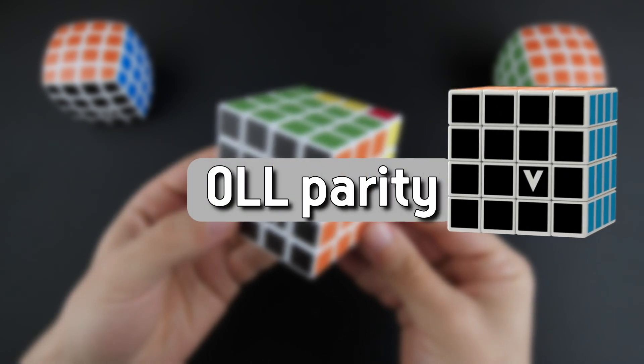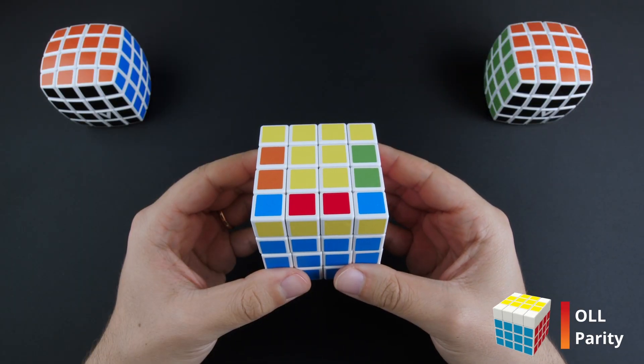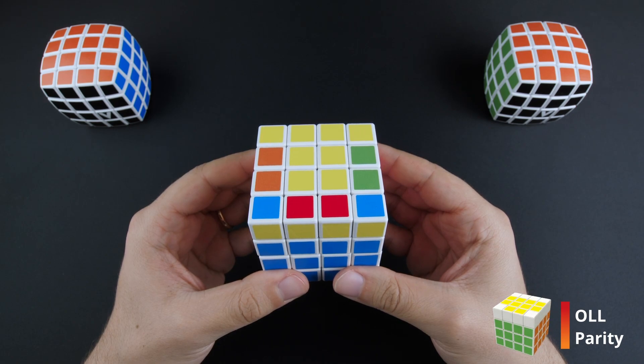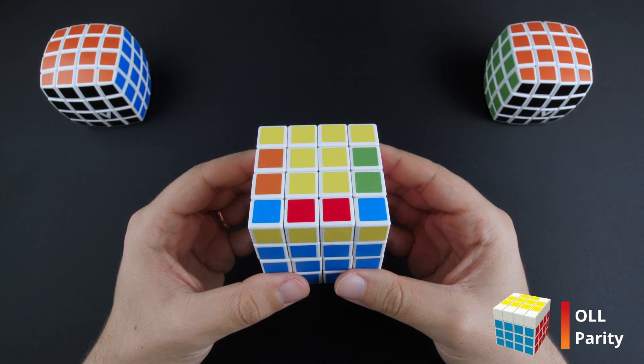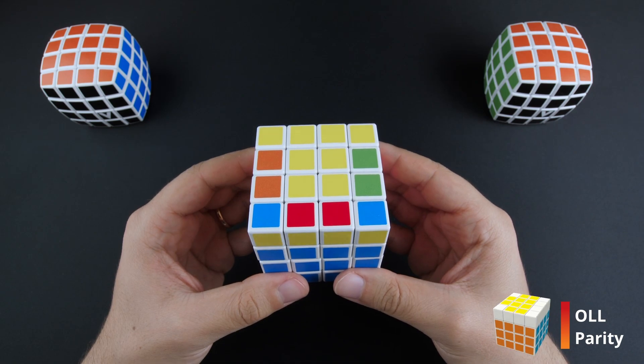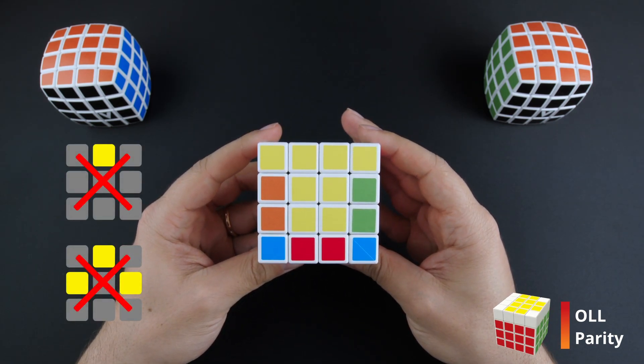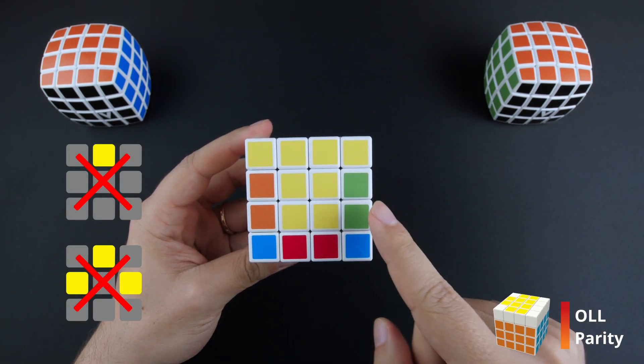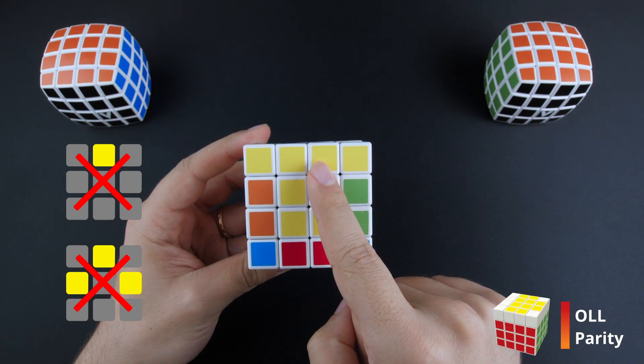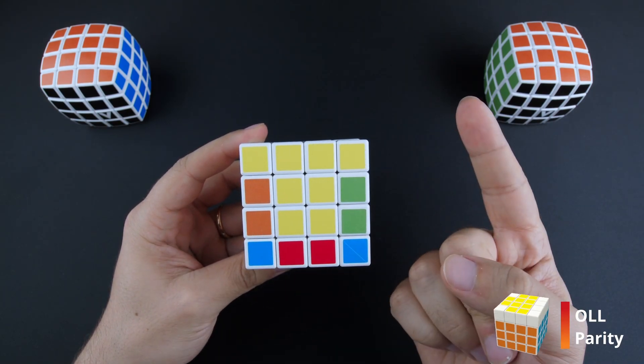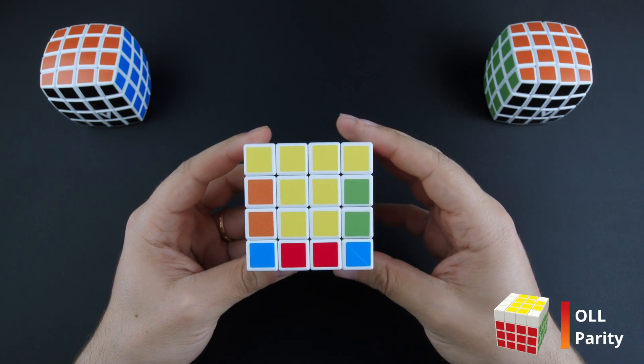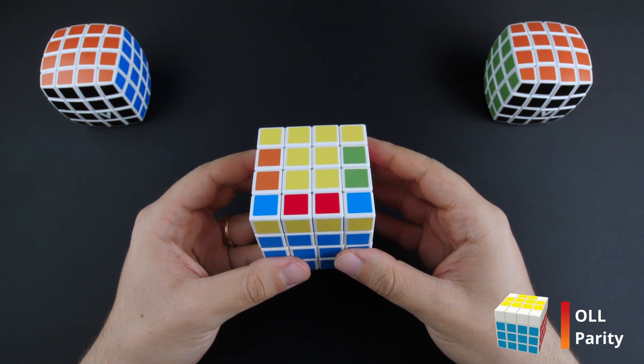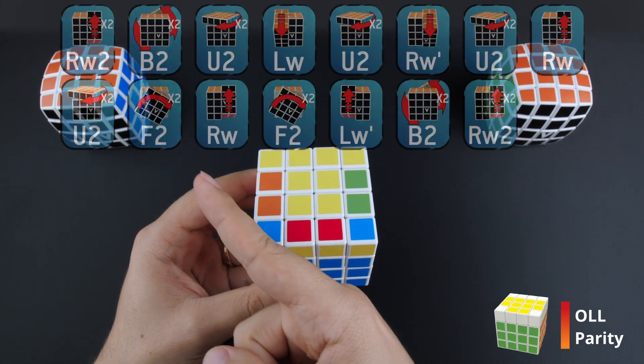The OLL parity. The yellow cross is the first step where there is a 50% chance that you need to make an extra step. Remember that on a 3x3, you cannot have an odd number of edge pieces facing the top. On the 4x4, this is not the case. If you have one or three edge pieces facing the top, this is known as the OLL parity error and can be solved with this algorithm.